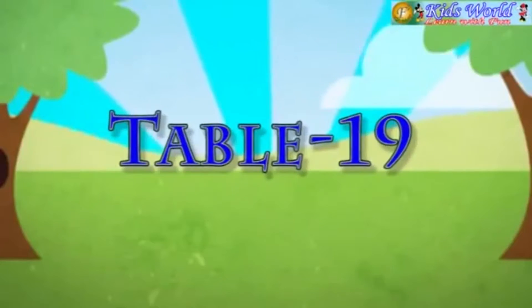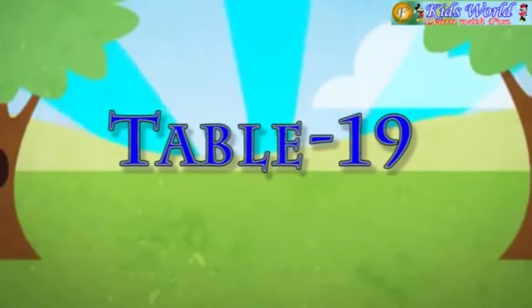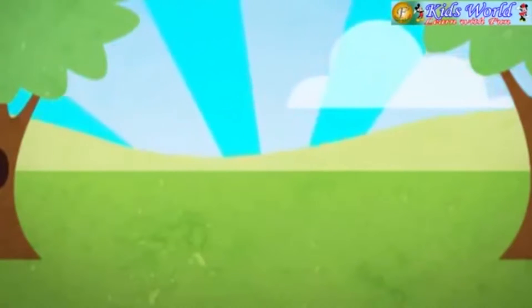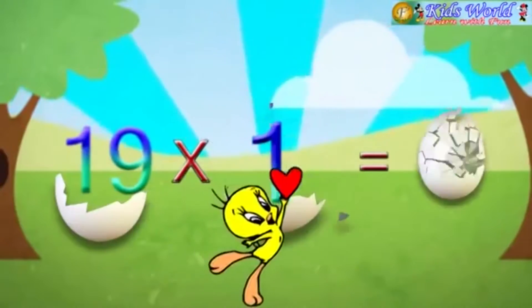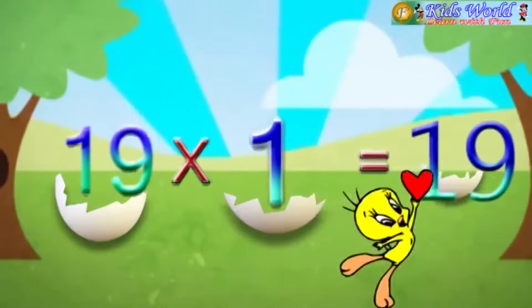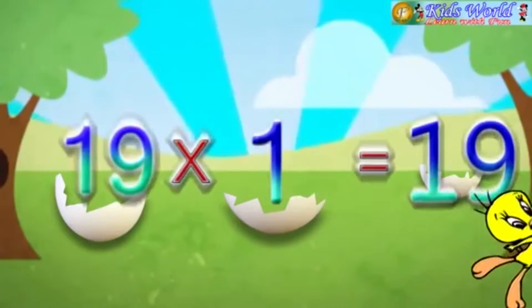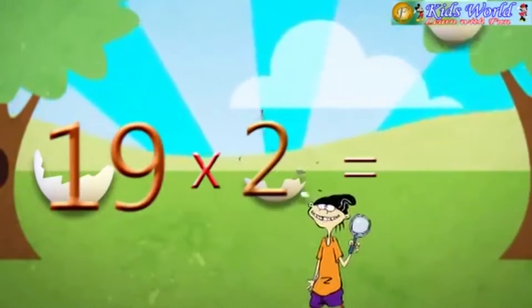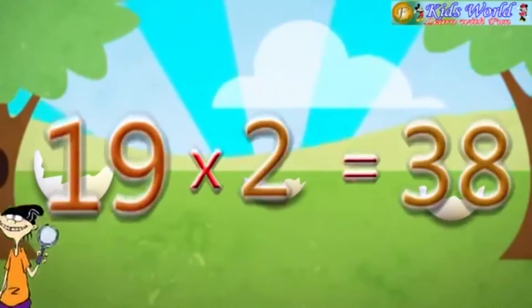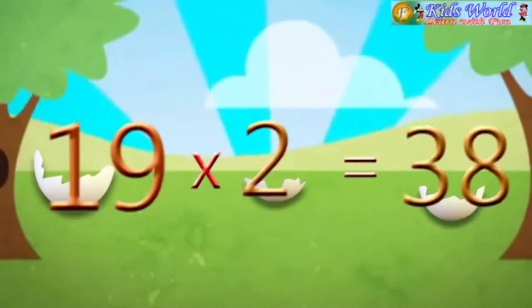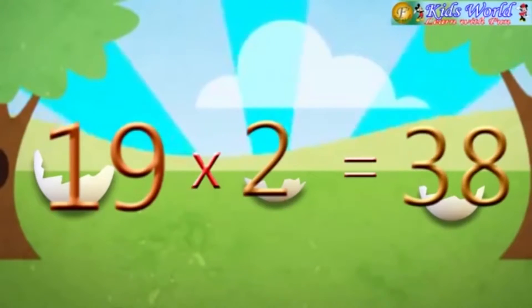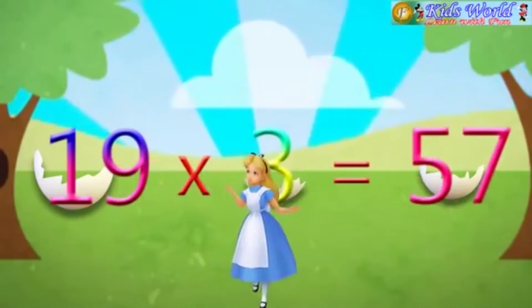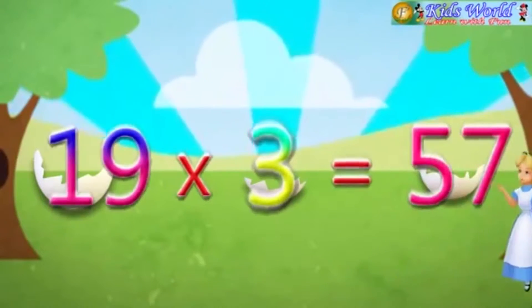Table 19. 19 into 1 is equal to 19. 19 into 2 is equal to 38. 19 into 3 is equal to 57.